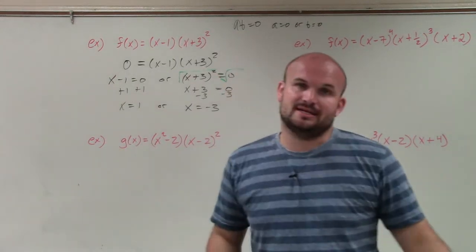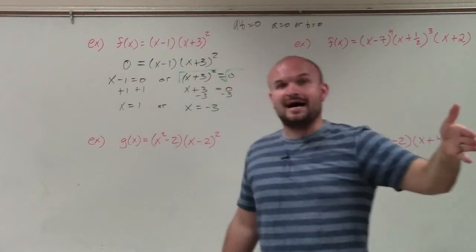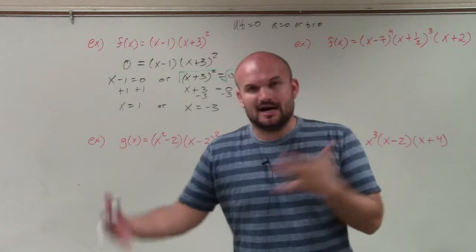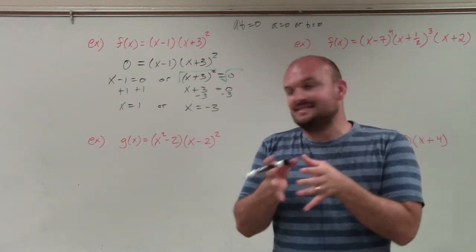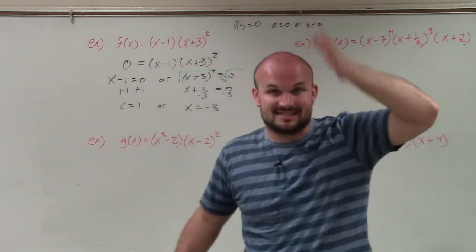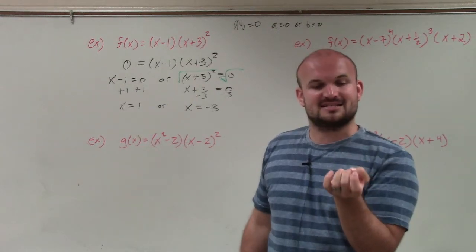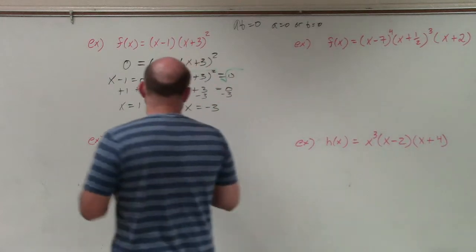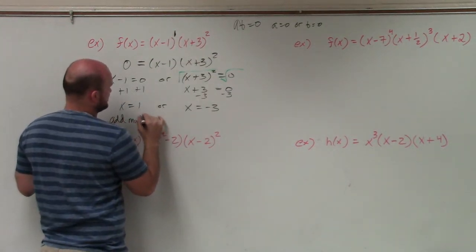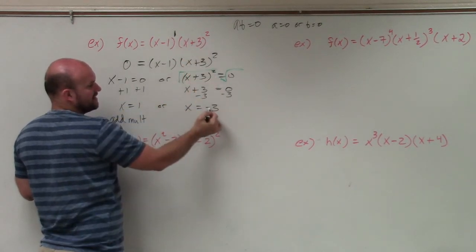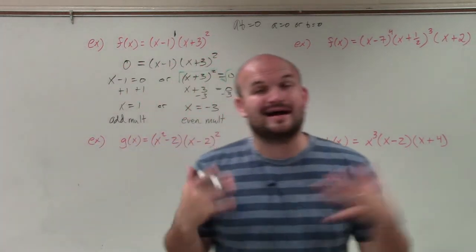Now we want to determine the multiplicity. We go back to the factored form and look at the powers of our factors. When the power is odd, it has an odd multiplicity — meaning the graph will actually cross the x-axis at that zero. When the power is even, it has an even multiplicity — the graph will touch the x-axis and then rebound. So x minus 1 has a power of 1, which is odd multiplicity, and (x plus 3) squared has a power of 2, which is even multiplicity.